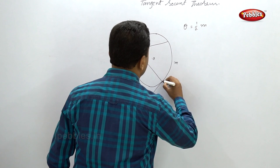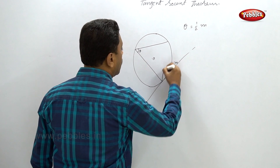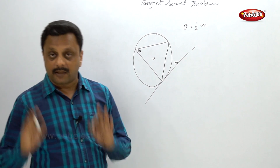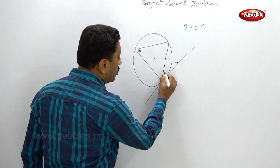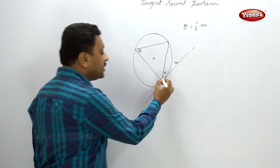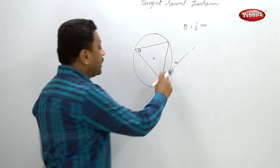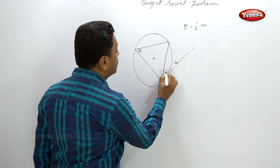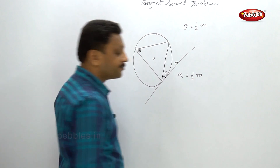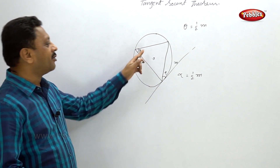Now consider that there is a tangent at this line and suppose this is a chord. Just like the inscribed angle theorem, this angle is also equal to the other angle, because both are intercepting arc M. So this first angle — let us name it alpha — alpha is equal to half of M. This is called the tangent secant theorem. It is just similar to the inscribed angle theorem.